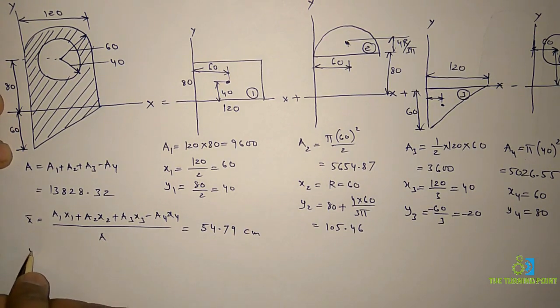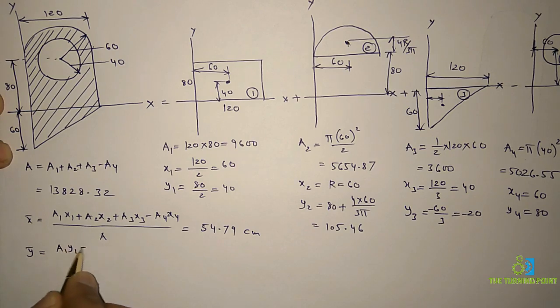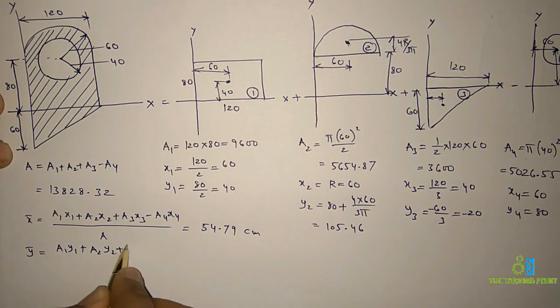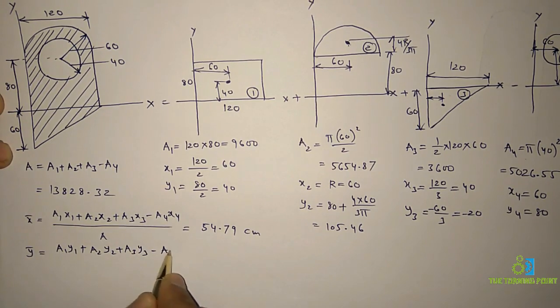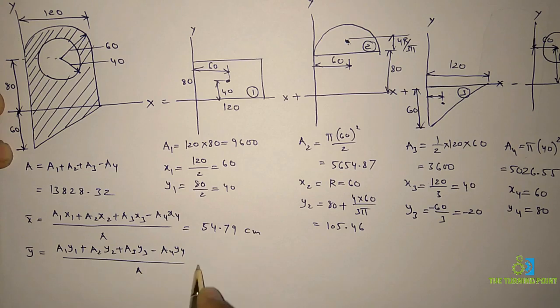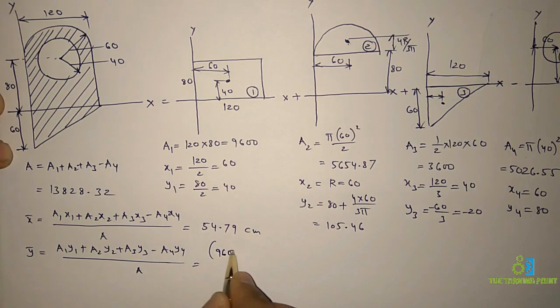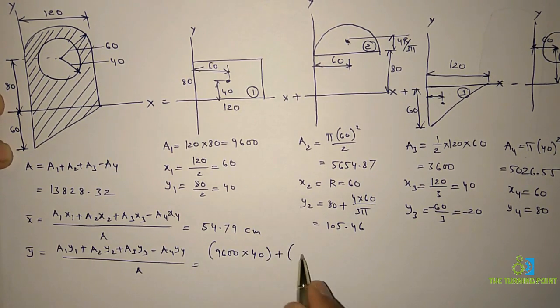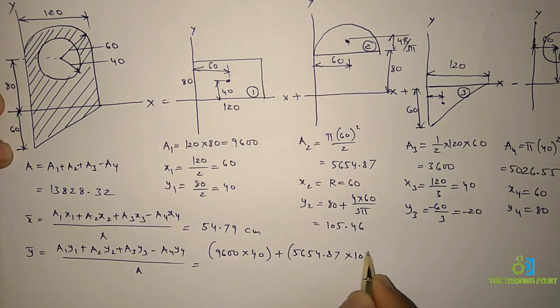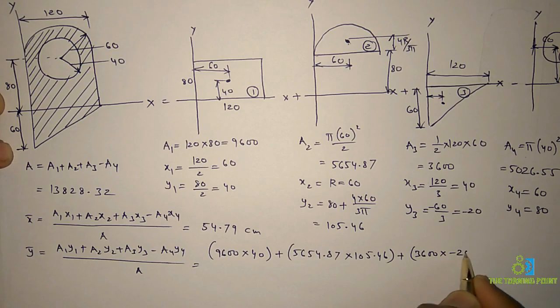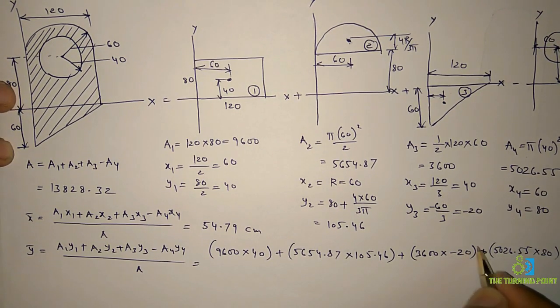Similarly, y-bar equals (A1·y1 + A2·y2 + A3·y3 - A4·y4) divided by A. Substituting: 9600 times 40 plus 5654.87 times 105.46 plus 3600 times minus 20 minus 5026.55 times 80.